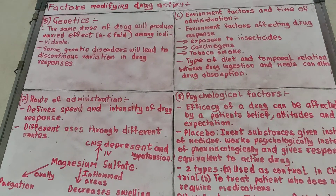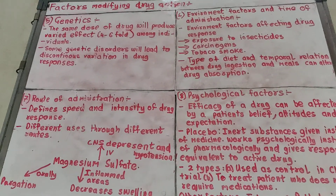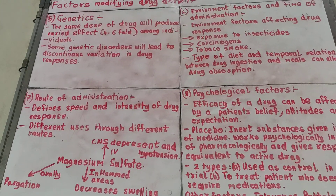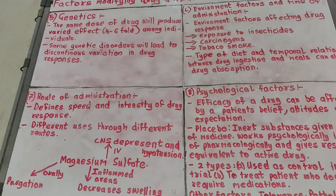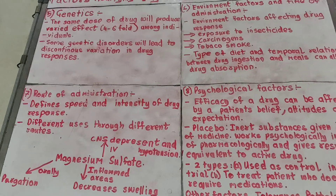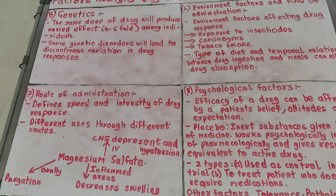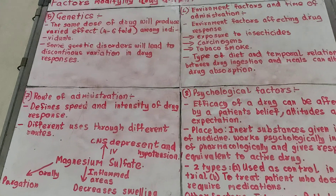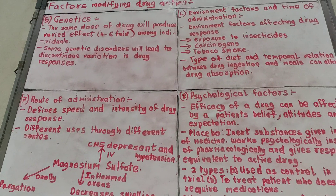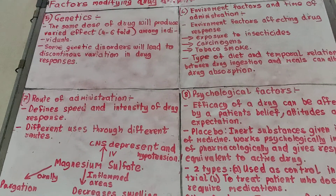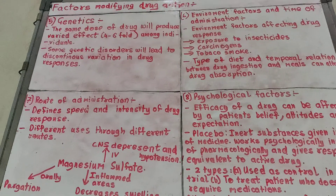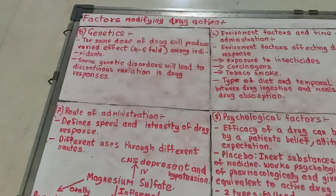Welcome back guys to another video. The topic for this video is factors modifying drug action. The first part was done earlier — if you've missed that part you can go back to it. The other four factors to be discussed here are genetics, environment factors and time of administration, route of administration, and psychological factors.